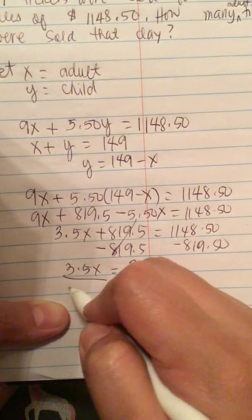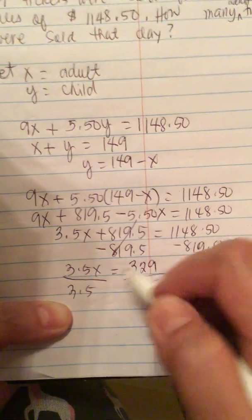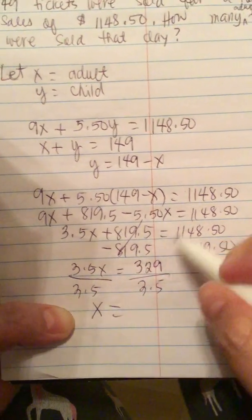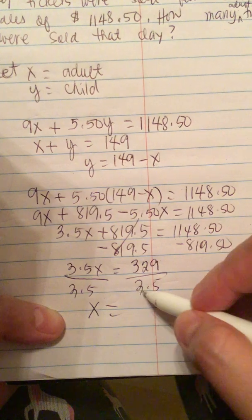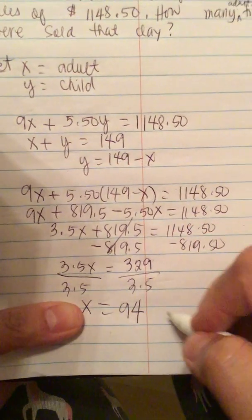We divide 3.50 from both sides of the equation. We now get X equals 329 divided by 3.50, which equals 94.